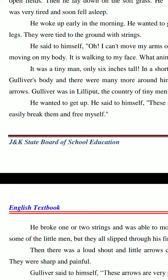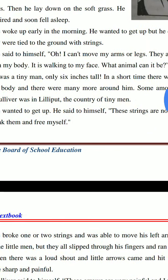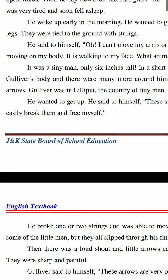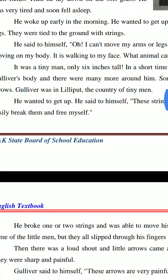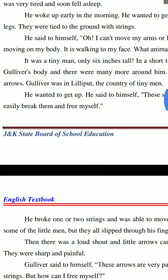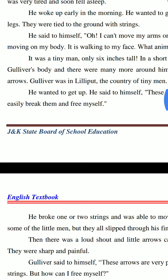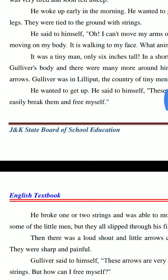All over Gulliver's body چھوٹے چھوٹے چھ انچ کے لوگ dozens میں ہوتے ہیں۔ Some among them carried arrows and bows — ان میں سے کچھ لوگوں کے پاس چھوٹے چھوٹے تیر ہوتے ہیں جو needle سے بھی چھوٹے ہوتے ہیں۔ Gulliver was in Lilliput — the country of tiny men۔ تو Gulliver کہاں ہوتا ہے؟ Lilliput میں۔